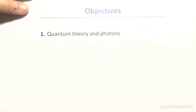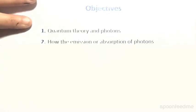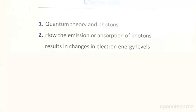Hi, so in this video we're going to focus on two main objectives. We're going to be looking at quantum theory and photons, and we're also going to be looking at how the emission or absorption of these so-called photons results in changes in electron energy levels.